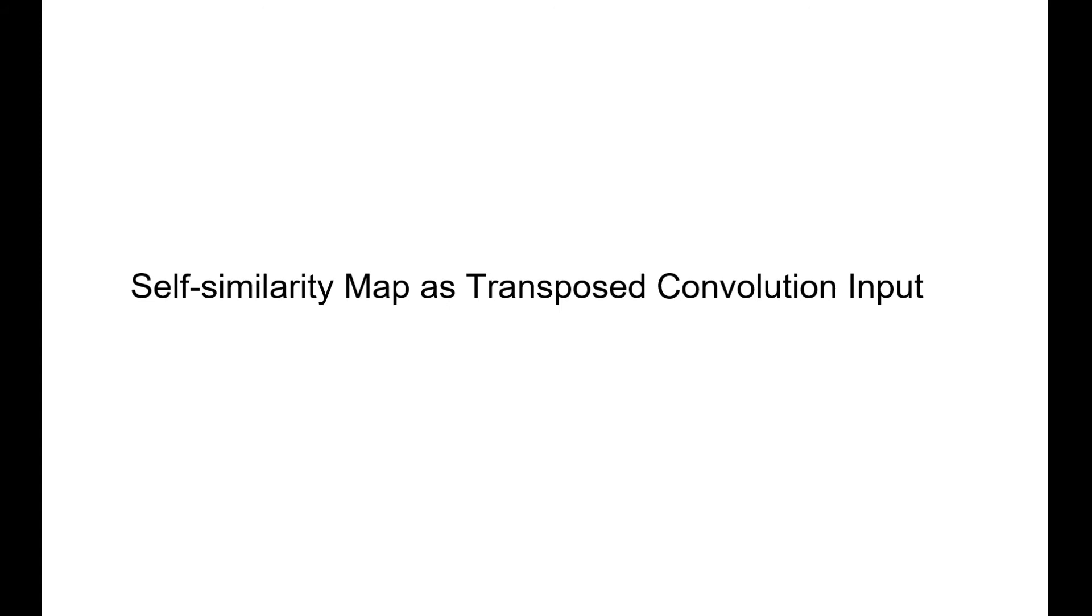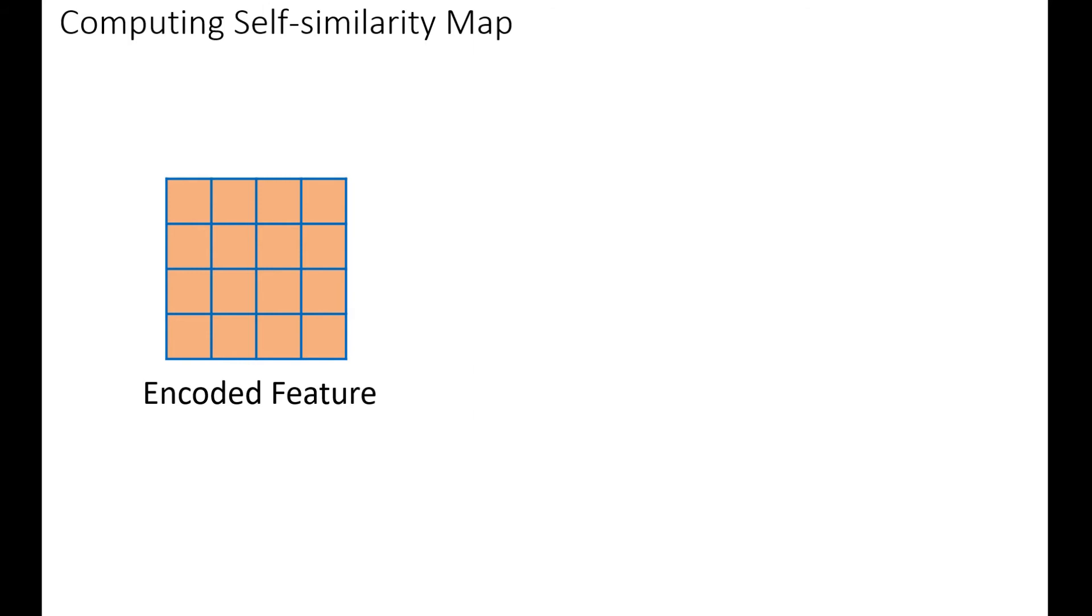The last question is, how we decide the transposed convolution input to get the assembling? In our method, we use the input texture self-similarity map as the transposed convolution input to get the assembling.